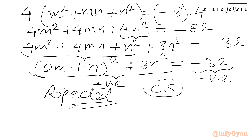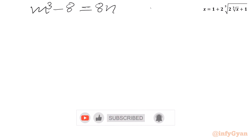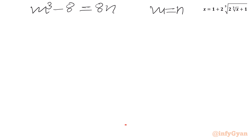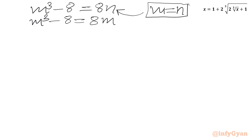Now I will consider the equation m equal to n. Let us substitute m equal to n into our cubic equation. The equation was m cubed minus 8 equal to 8n. Applying n equal to m, we get m cubed minus 8m equal to zero.